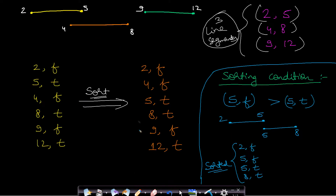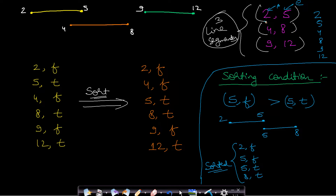Now we will use a specific method to solve this problem. I have taken three line segments with points 2,5 — 4,8 — and 9,12, where the first value is the starting point and the second is the ending point. To solve this, we divide these points into two parts. We separate the starting and ending points and denote the starting point with false and the ending point with true — these are boolean values.